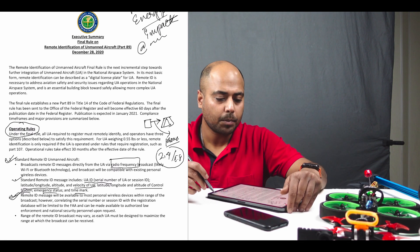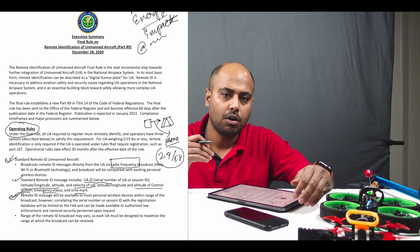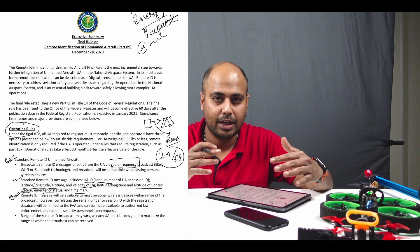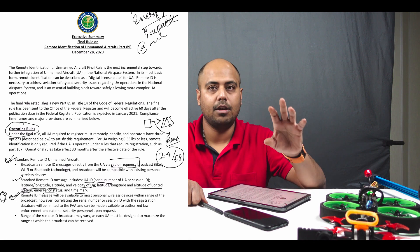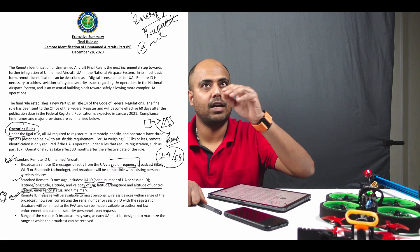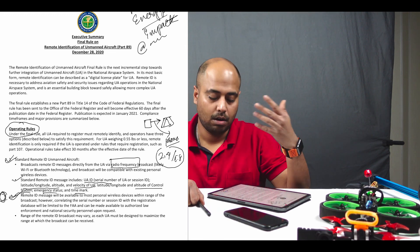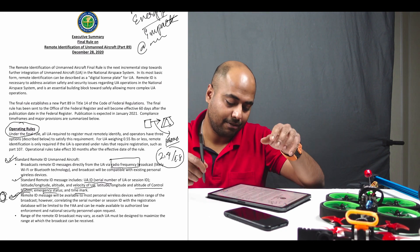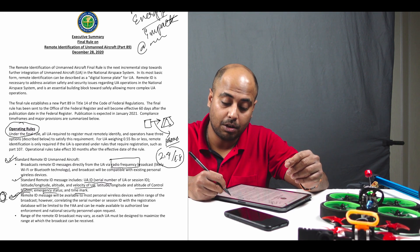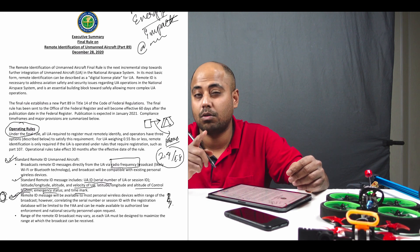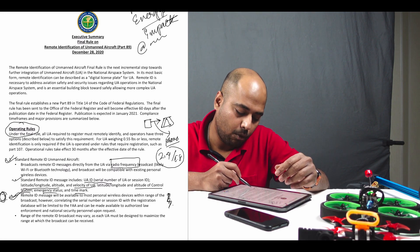This is going to be tricky, especially for people doing cross-country tours and flying from one state to another. Giving local law enforcement control over your devices is understandable to stop unauthorized flights, but it was personally concerning when flying outside my home state. They also want to know the range of the Remote ID broadcast, as each UA must be designed to maximize that range.